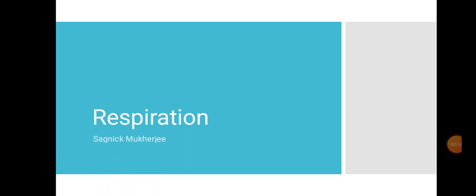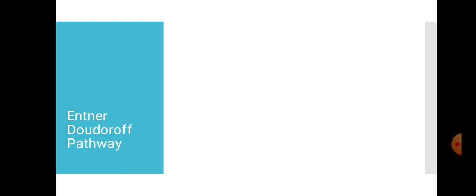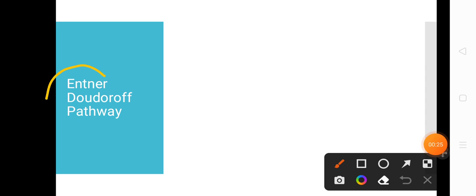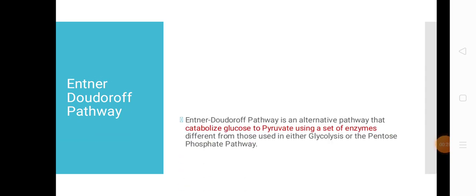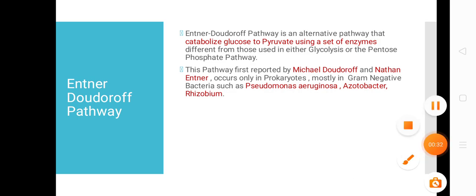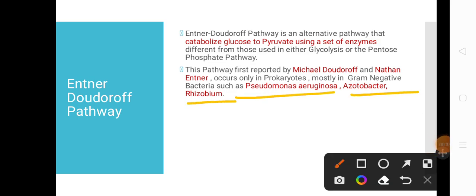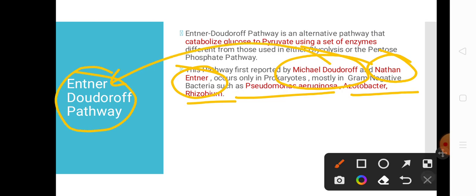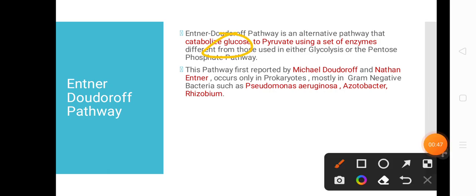Welcome back in another video tutorial for microbiology. Today we will talk about an alternative mode by which glucose can be converted into pyruvate — the Entner-Doudoroff pathway. This pathway is mostly preferred by gram-negative bacteria such as Pseudomonas aeruginosa, Azotobacter, and Rhizobium. It was first discovered by Michael Doudoroff and Nathan Entner, which is why it is named the Entner-Doudoroff pathway.